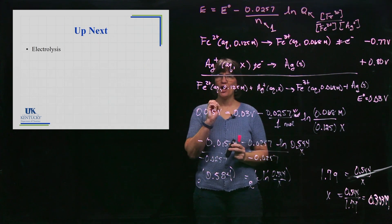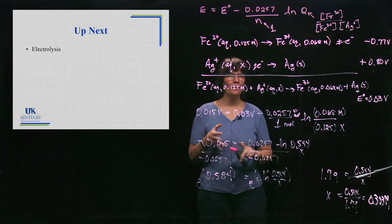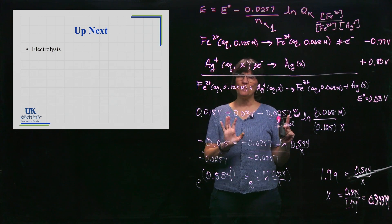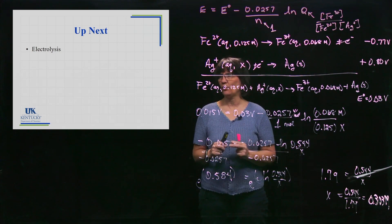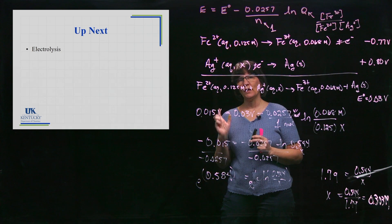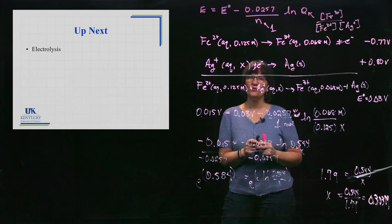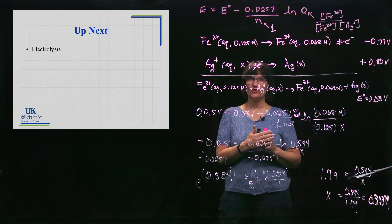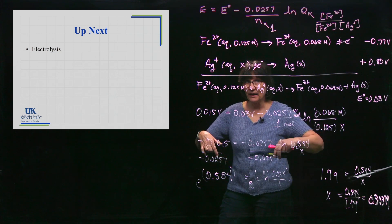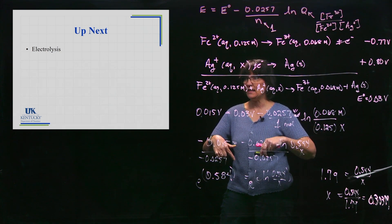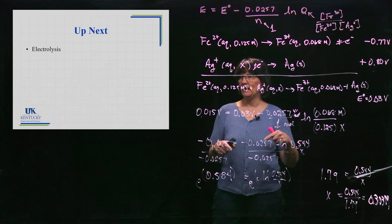We've done a lot of voltaic cells where you hook them up and let them run spontaneously to get a voltage. We're now ready to go to electrolysis. Electrolysis is forcing these reactions to go in the opposite direction by pumping electricity in — so instead of getting electricity out, you're pumping it in.